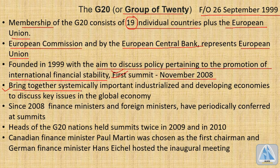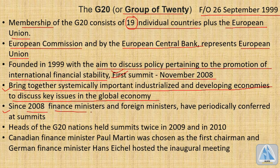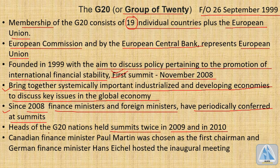The aim is to bring together systematically important industrialized and developing economies to discuss key issues in the global economy. Since 2008, finance ministers and foreign ministers have periodically conferred at summits. In 2009 and 2010, the summits were held twice each year. The Canadian finance minister Paul Martin was chosen as the first chairman, and the German finance minister Hans Eichel hosted the inaugural meeting.